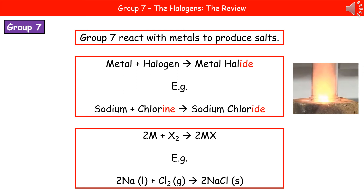We also need to write the balanced symbol equation. Using M for a metal and X for a halogen, the general equation is: 2M + X₂ → 2MX, because the halogen goes around as a diatomic molecule, hence the X₂. With actual symbols, that becomes: 2Na + Cl₂ → 2NaCl.